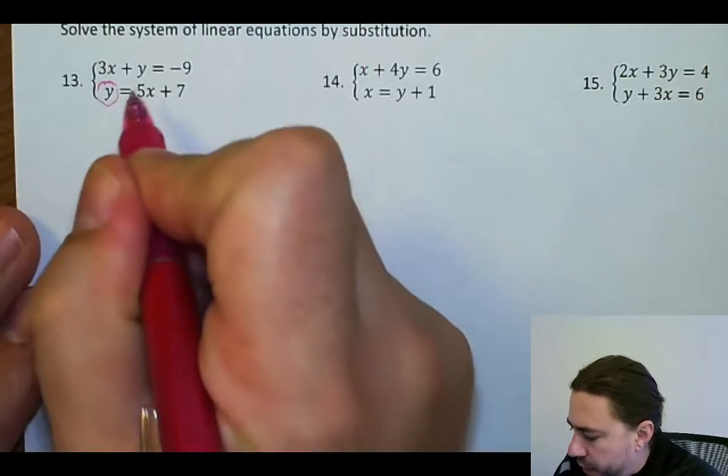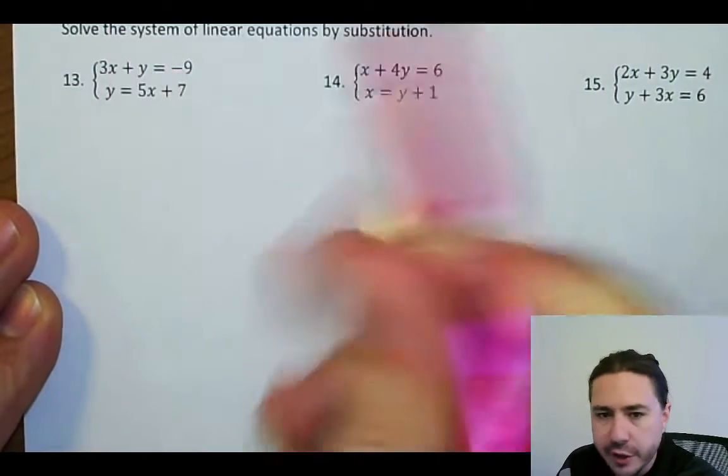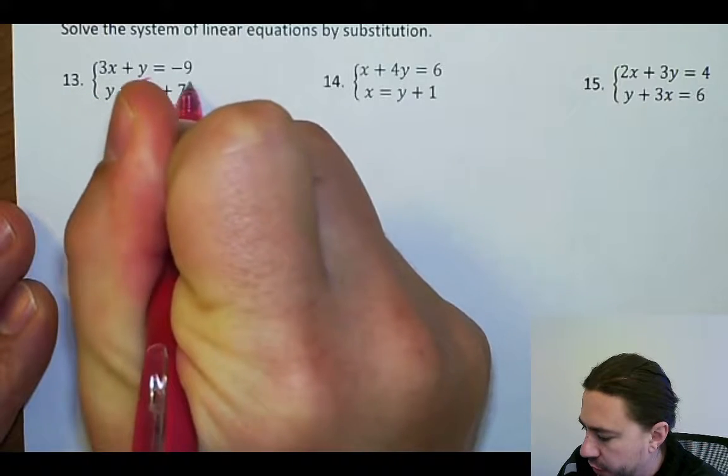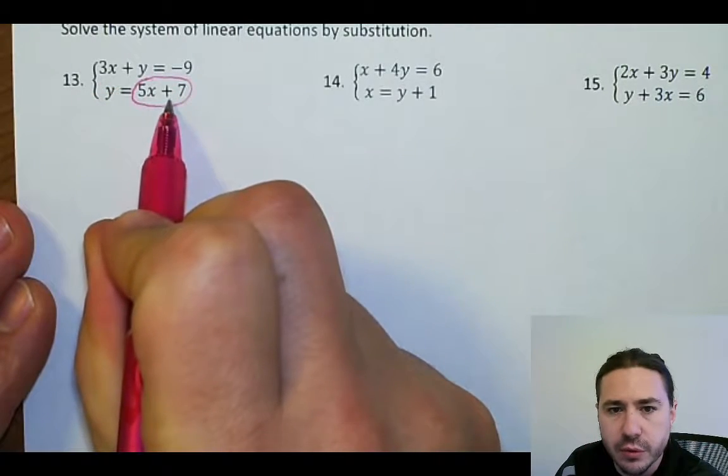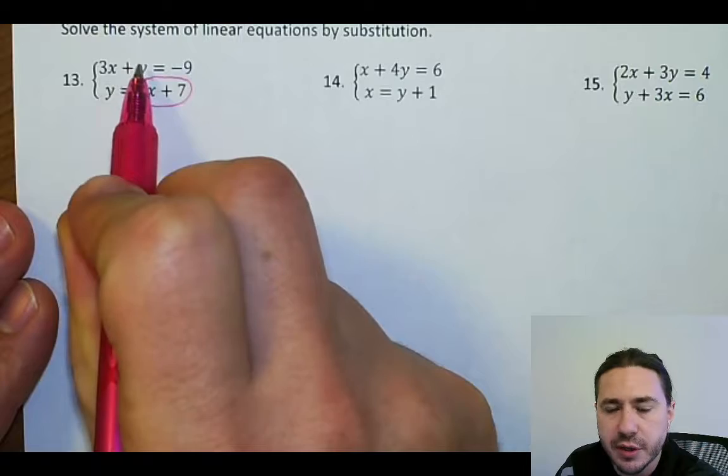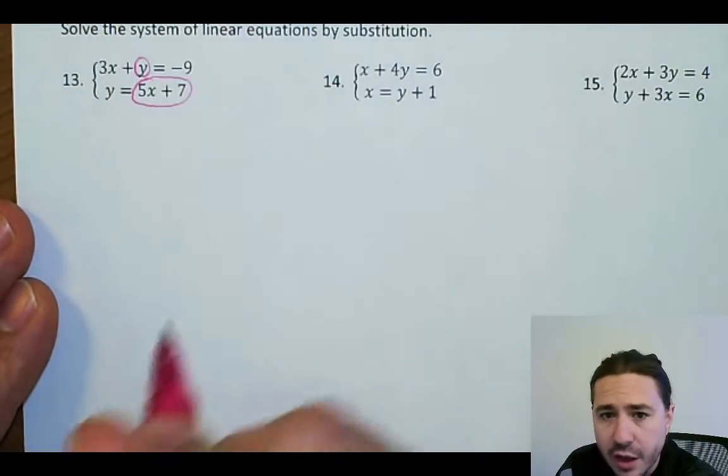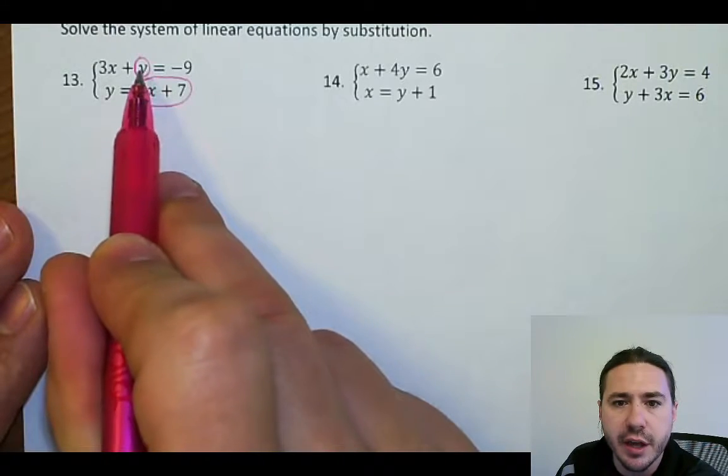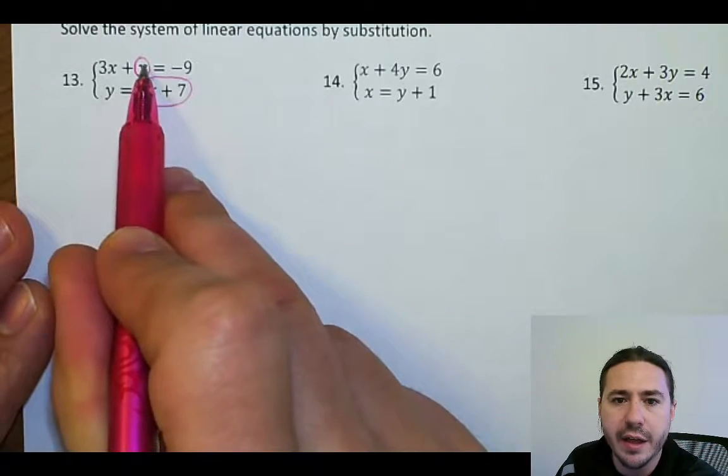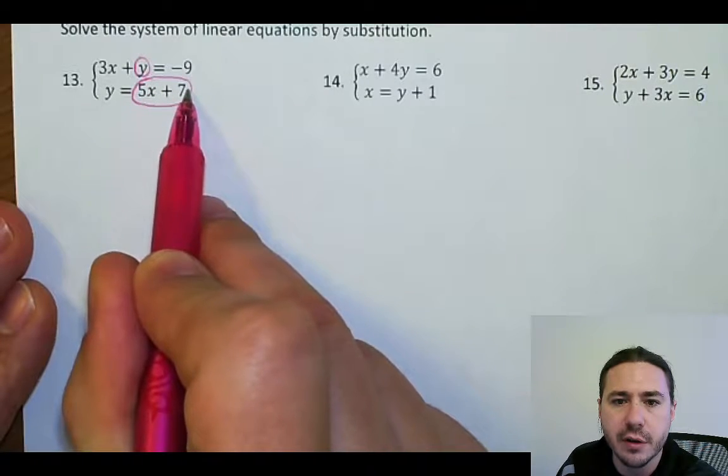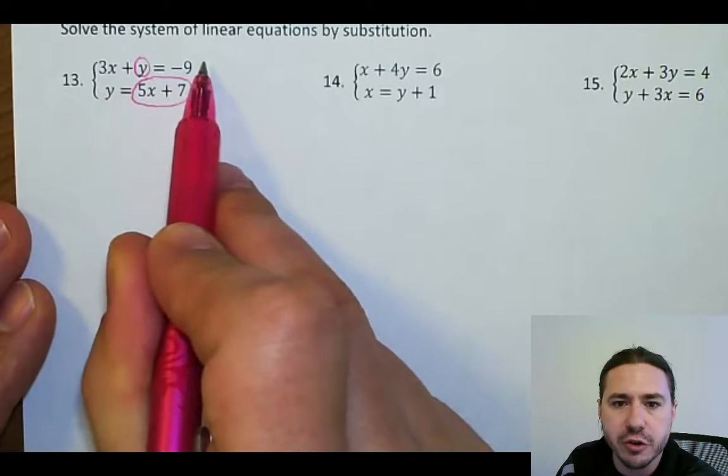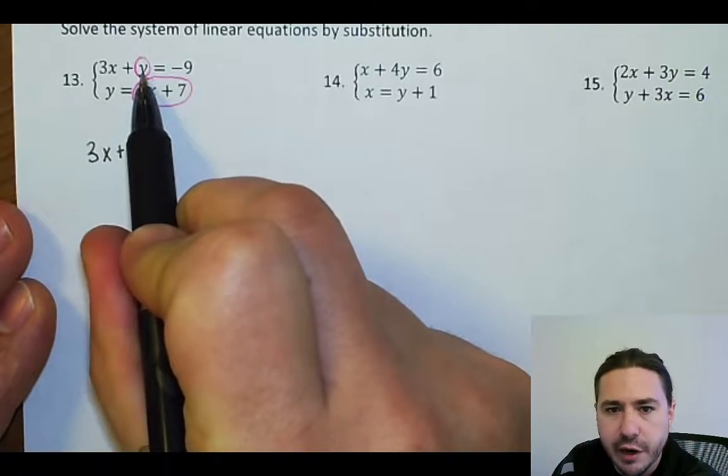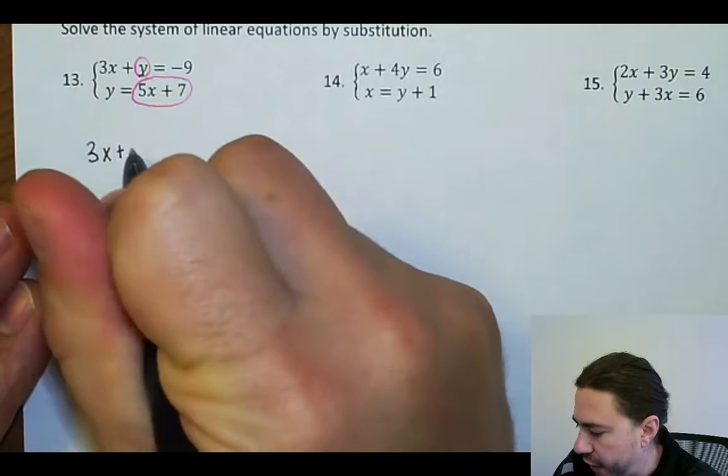The first step is once you have a variable isolated like we do here, you are going to take the expression that that variable equals and substitute it into the variable in the other equation. So if y equals 5x plus 7, then I can replace y in the other equation with 5x plus 7. So I'm going to rewrite this first equation, 3x plus, and instead of writing y, I'm going to write 5x plus 7.